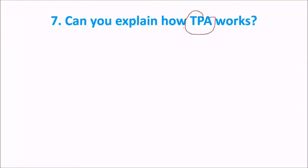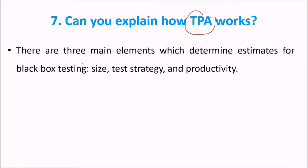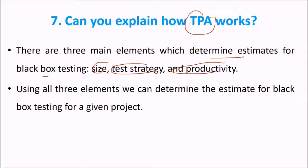How does TPA work? In test point analysis, there are three main elements which determine the estimate for black box testing: size, test strategy, and productivity. Using all three elements — size, test strategy, and productivity — we can determine the estimate for black box testing.